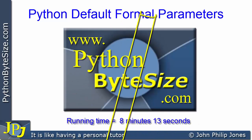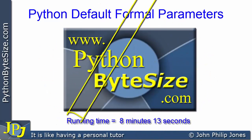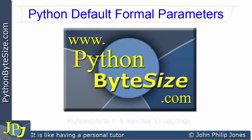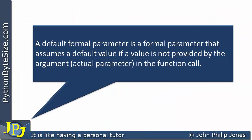This video is going to look at how you can set up default formal parameters for a Python function. A default formal parameter is a formal parameter that assumes a default value if a value is not provided by the argument — in other words, the actual parameter in the function call.